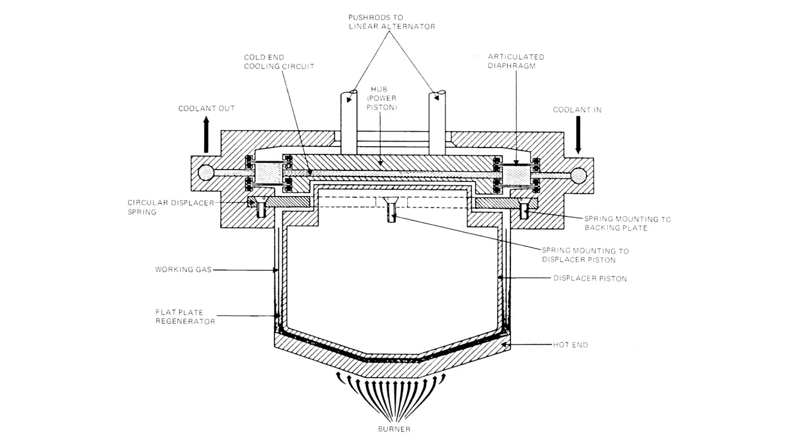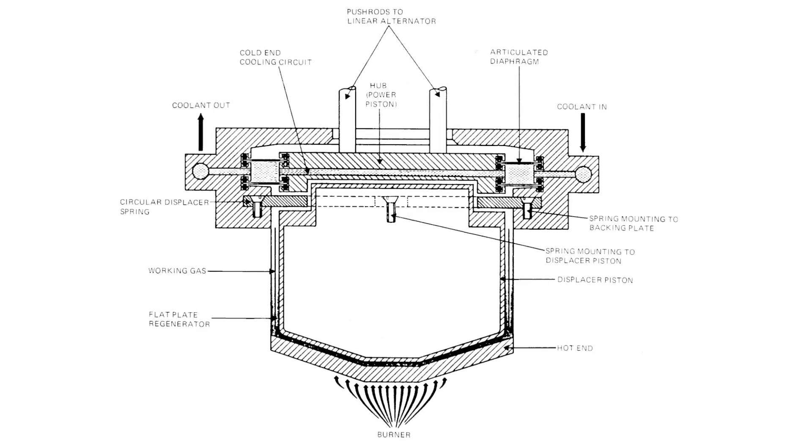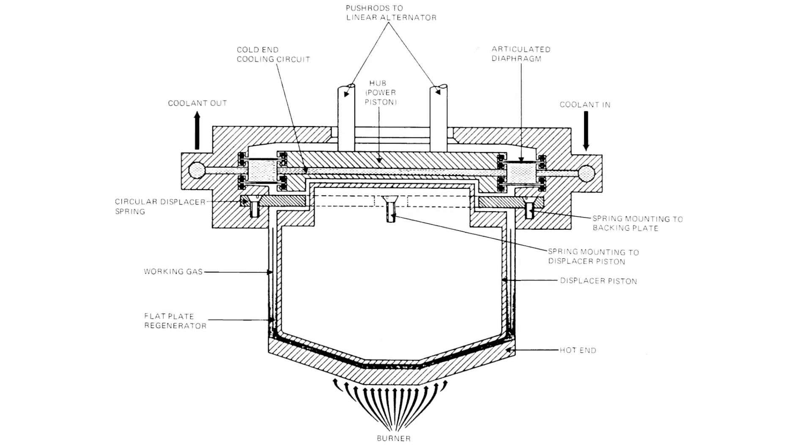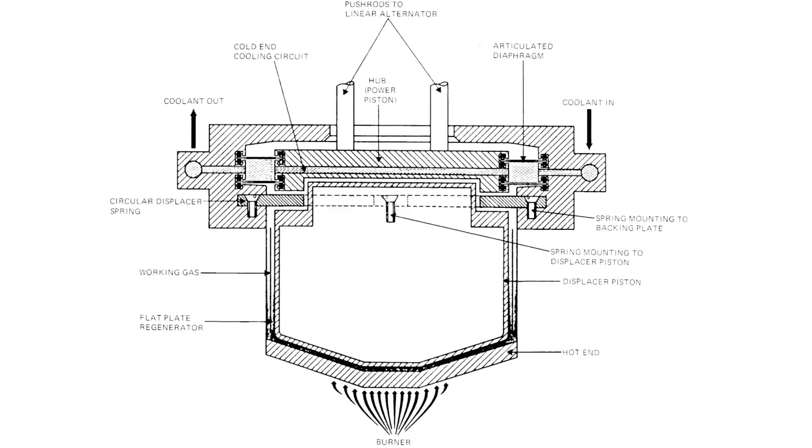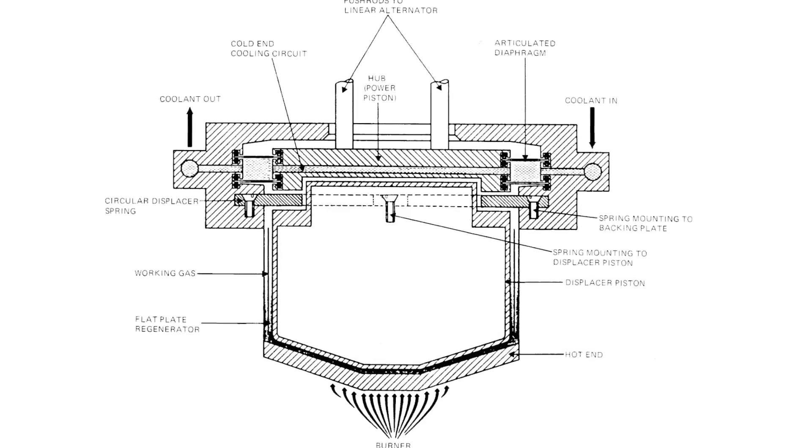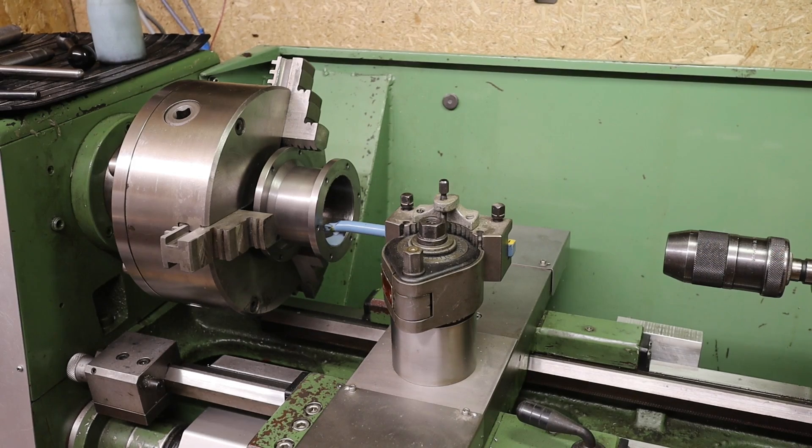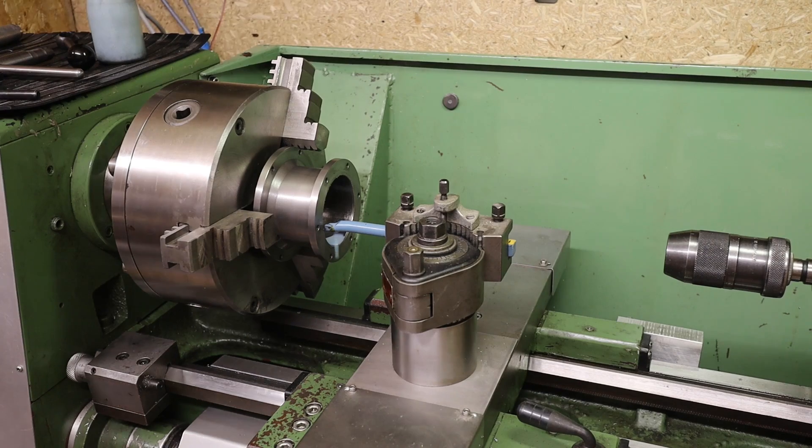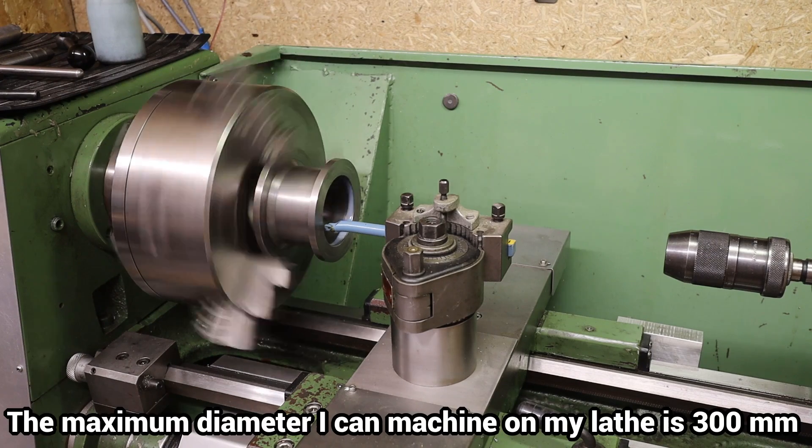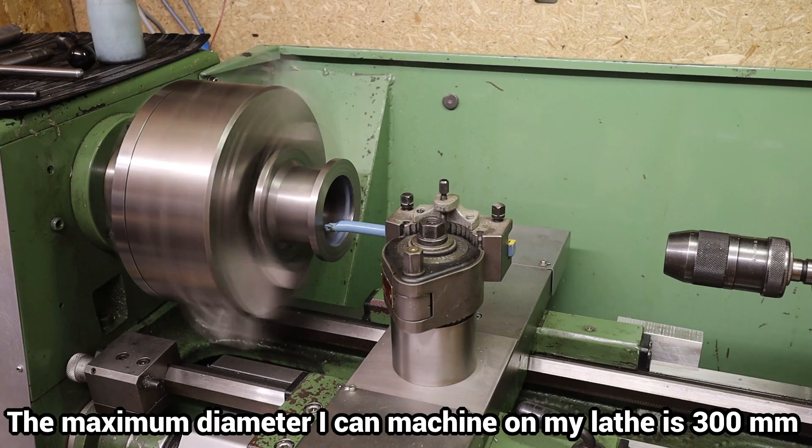The ratio of very large bore diameter to very small stroke avoids the need for an expansive tubular or finned heater and cooler. This advantage is offset by the need of much bigger parts with greater workload which would then push machines to their limits.